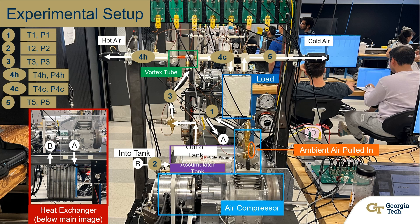The experiment is set up in lab. Highlighted in orange there is an open valve where ambient air is pulled in by the air compressor. The air compressor then allows the air to flow into the heat exchanger, which is modeled at bubble A. Once the air passes through the heat exchanger, it goes into the accumulator tank. Out of the accumulator tank, it goes up through the vortex tube where the hot air and cold air are separated. The hot air is emitted to the left and the cold air goes to the right.